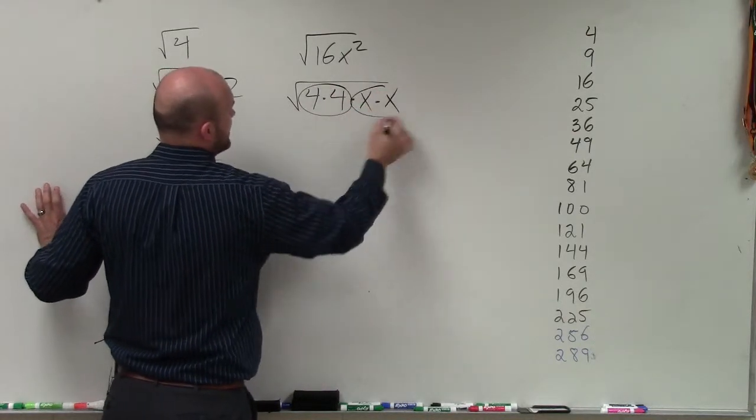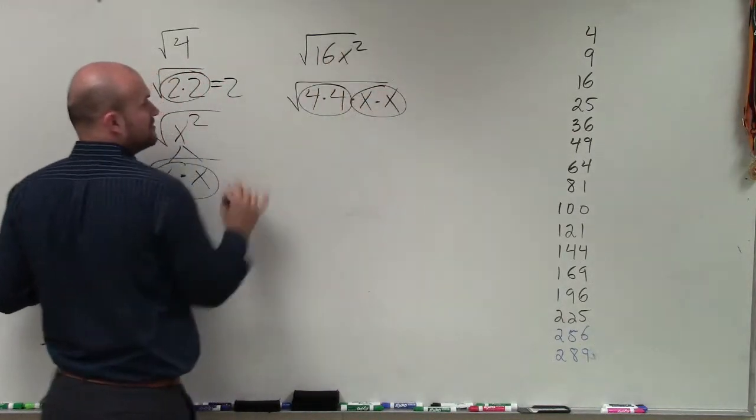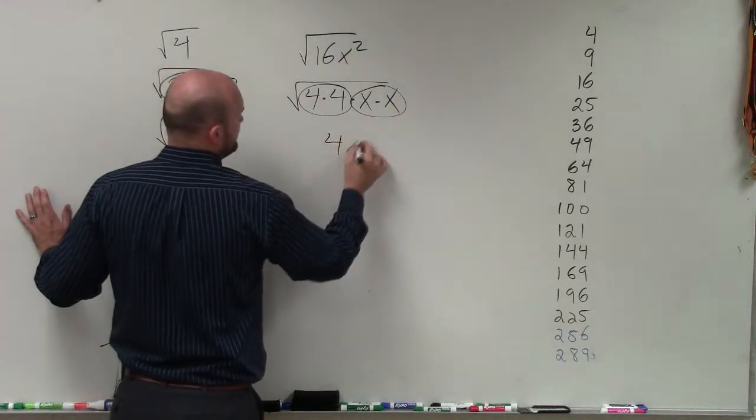Well, here I have a pair of 4's and I have a pair of x's. So the square root of 16x squared is just going to be 4x.